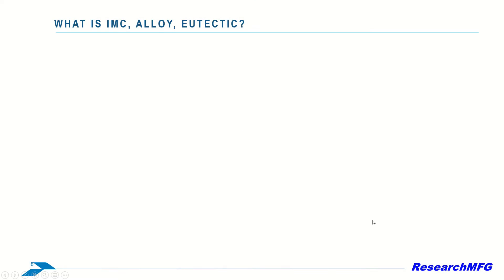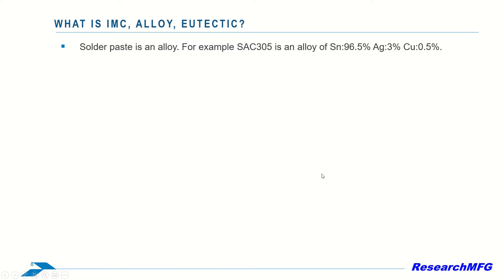So, what is IMC, alloy, eutectic? What is the difference between them? The solder paste is an alloy. For example, SAC305 is an alloy of tin at 96.5%, silver at 3%, and copper at 0.5%.